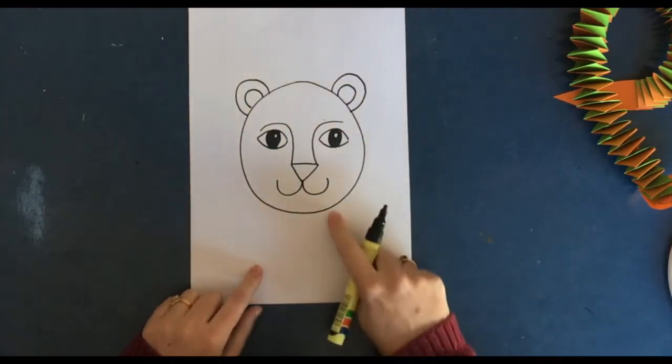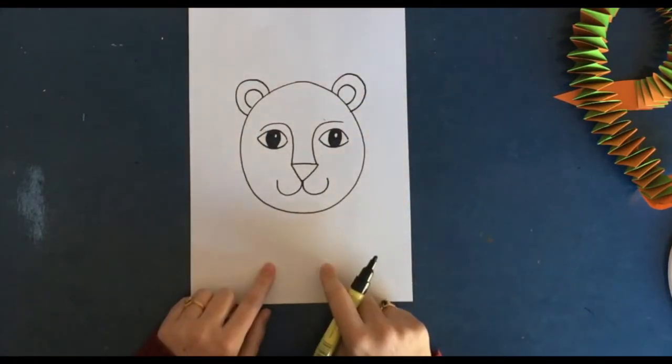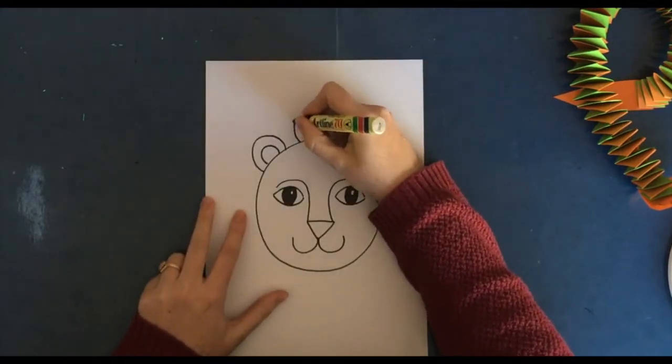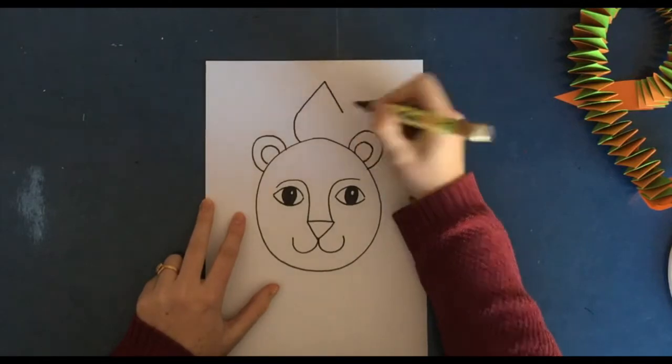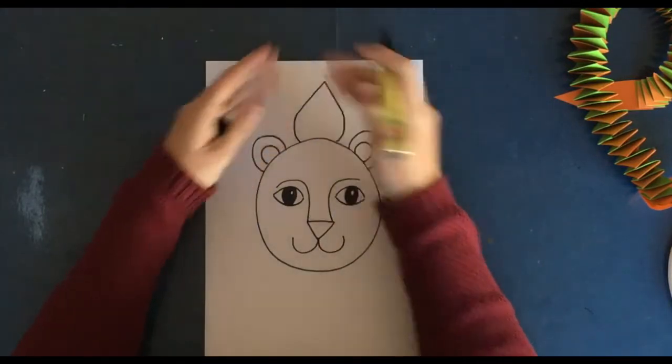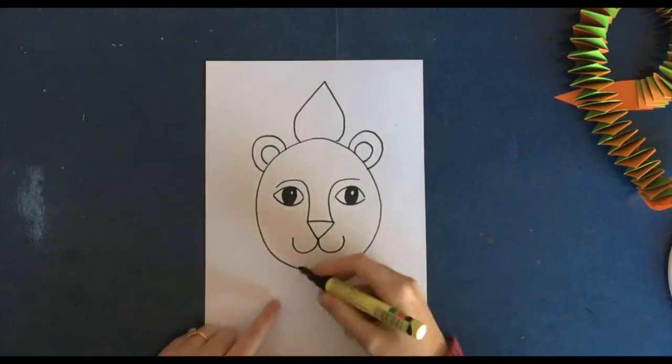Okay, now we need to talk about the sunshine part of our lion, and what we're going to do is we're going to draw a teardrop shape. So what I want you to do at the top of your head: draw a curve, then draw a straight line going up, make a point, and then come back down again. That's going to make our petal teardrop sunshine shape.